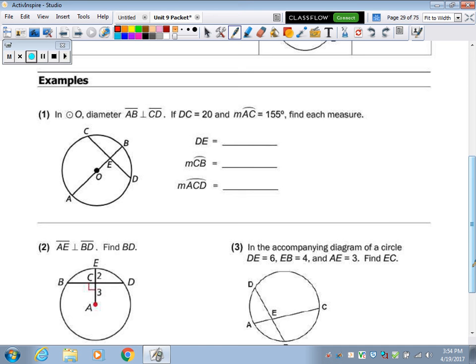In a circle O, you have a diameter AB perpendicular to CD. So they're telling me it's perpendicular. So if DC is 20, that means it's split into 10 and 10. Arc AC is 155. That means this is 155. This is half of a circle, so this will be 25, because it has to be 180 for half a circle. So that's 25, and that's 25. So DE is 10, arc CB is 25, and arc ACD. So ACD is that 155 plus the 25 plus the 25. ACD is this whole arc.